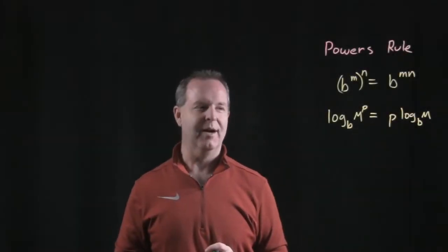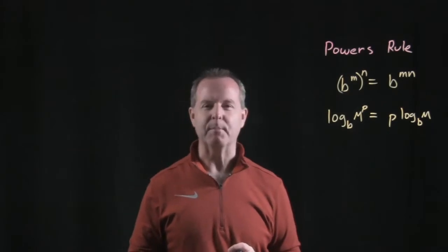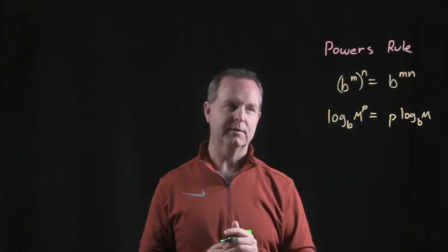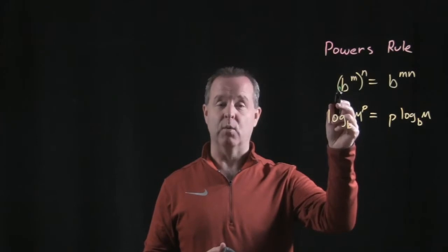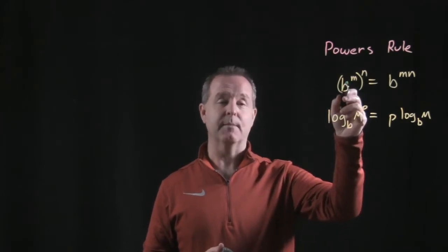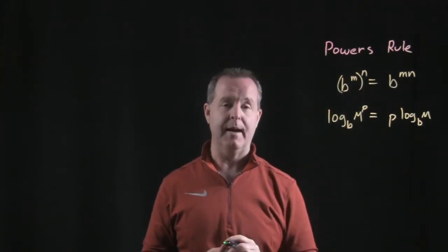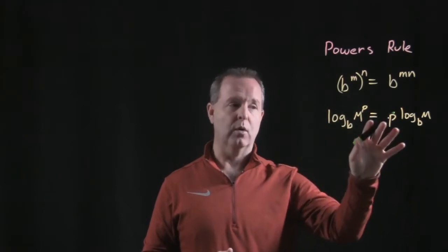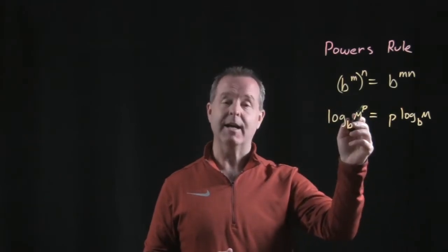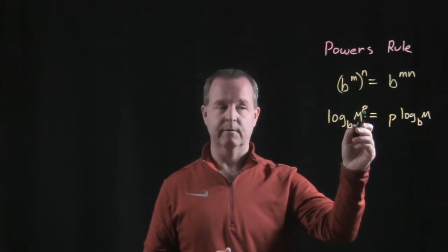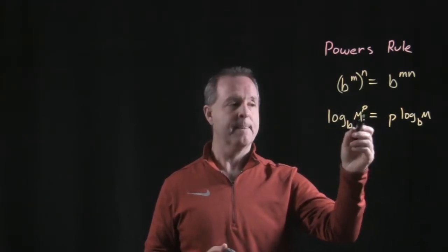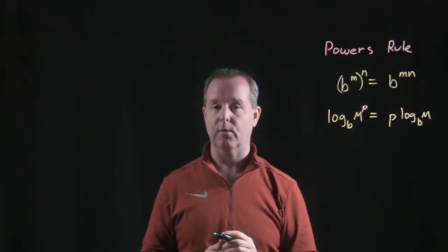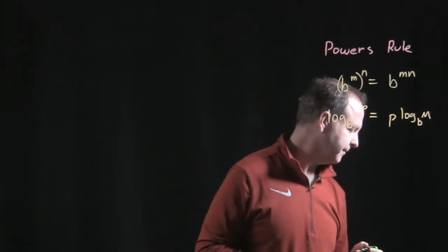One of my favorite properties with logarithms is where we pull the exponent out — it's called the power rule. Remember in exponent world, when we raise a power to a power, we're multiplying the powers. How that looks in logarithm world is we take the exponent p — for power, maybe — and pull it all the way out in front of the logarithm.